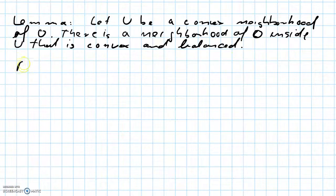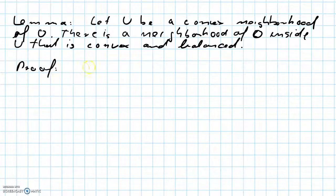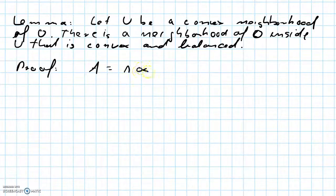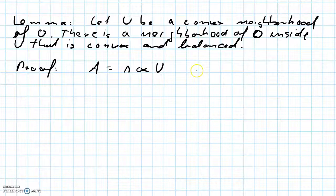Proof. We define a set A as the intersection over all αU's, where α ranges over all scalars of absolute value one.